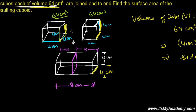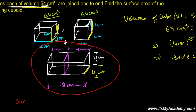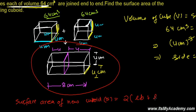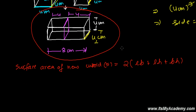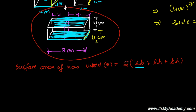Now we just have to find the total surface area of this new cuboid. The formula for the total surface area of a cuboid is 2 times (LB + LH + BH), where L, B, and H represent length, breadth, and height. Length times breadth represents the top and bottom surfaces — so it appears twice. Similarly, length times height represents the front and back surfaces — so twice of LH.